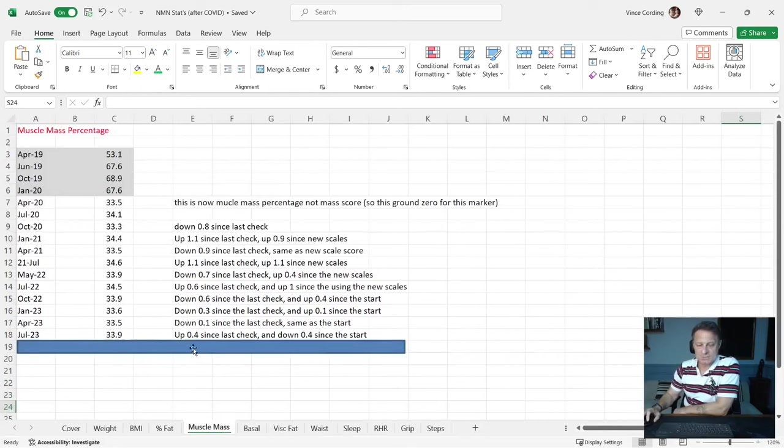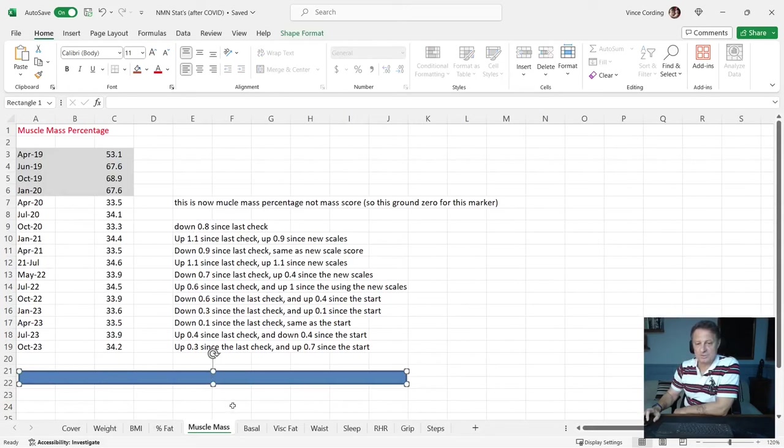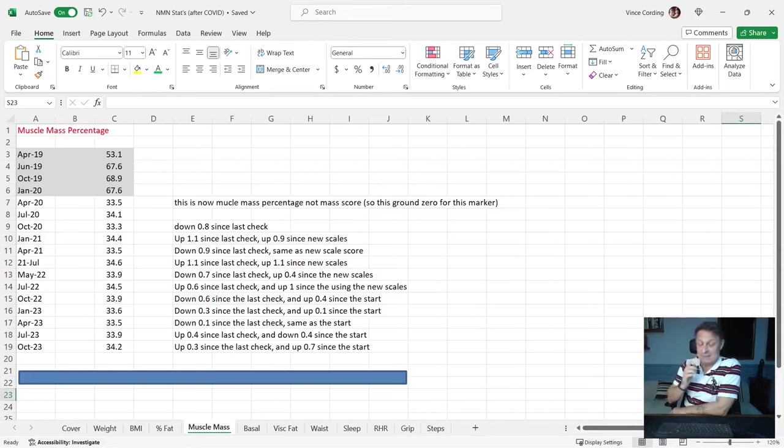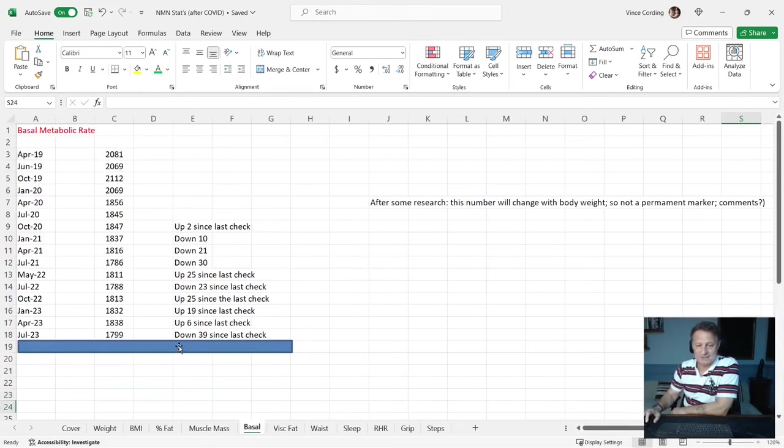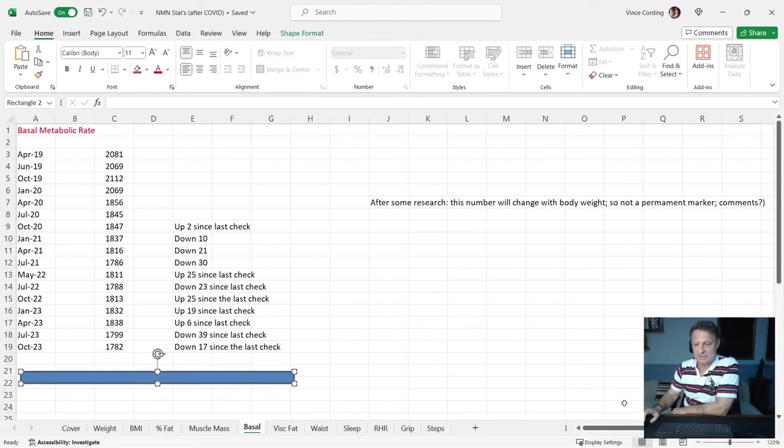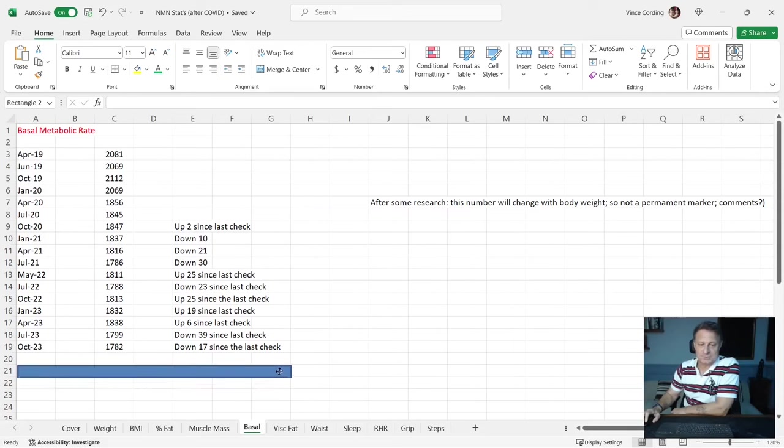Moving on to muscle mass, you can see it was 33.9%, it's now 34.2. So up 0.3% since the last check, and up 0.7% since the start, which is good because lean muscle mass is something that I want to maintain, even though I am gradually losing weight as the weeks and months roll on. My basal metabolic rate was 1799, it's now 1782, so down slightly. This is going to drop as your body weight drops because your body doesn't need to use as much energy when you're resting. But obviously the higher this number is, the better.